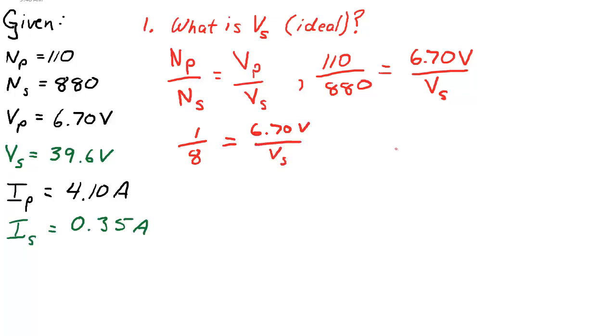And if I solve it for VS with a little bit of cross-multiplying, I end up getting my secondary voltage is 6.70 volts times 8. It's 8 times bigger. So when I work this out, I end up getting a secondary voltage of 53.6 volts. That's what we would expect if the transformer was ideal.